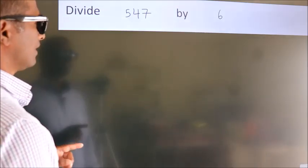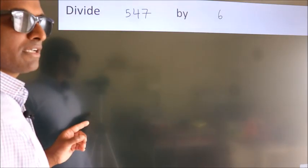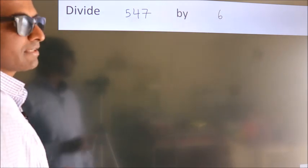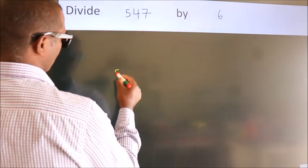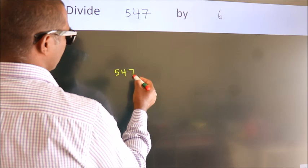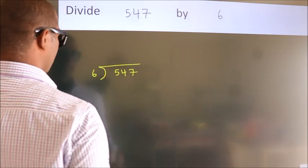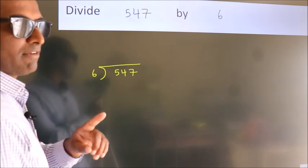Divide 547 by 6. To do this division, we should frame it in this way. 547 here, 6 here. This is your step 1.